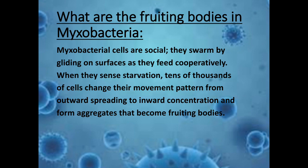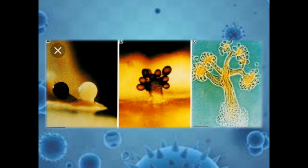What are the fruiting bodies in Myxobacteria? Myxobacterial cells are social — they swarm by gliding on surfaces as they feed cooperatively. When they sense starvation, tens of thousands of cells change their movement pattern from outward spreading to inward concentration, forming aggregates that become fruiting bodies. You can observe here in the diagram the fruiting bodies of Myxobacteria.